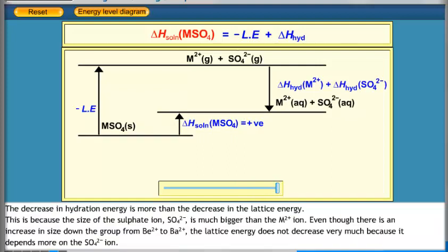The decrease in hydration energy is more than the decrease in the lattice energy. This is because the size of the sulfate ion SO42- is much bigger than the M2+ ion.